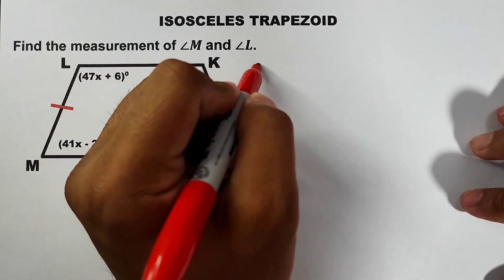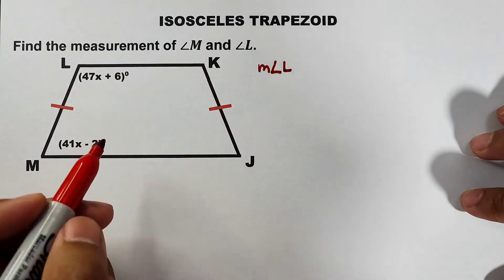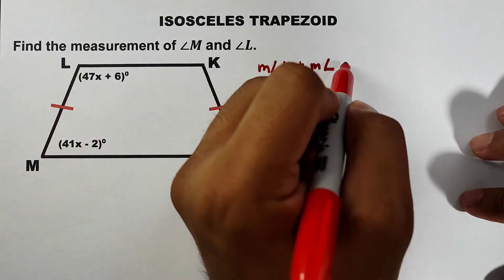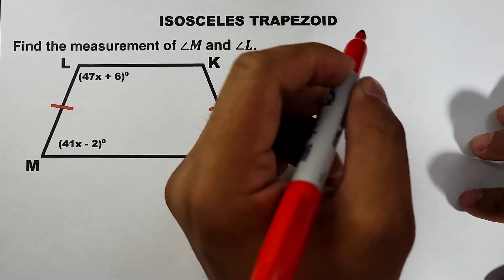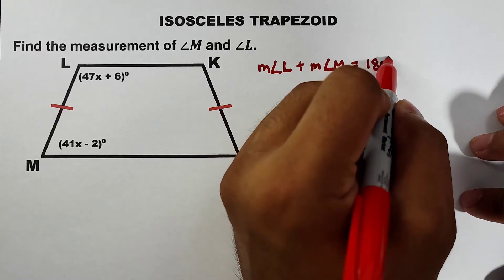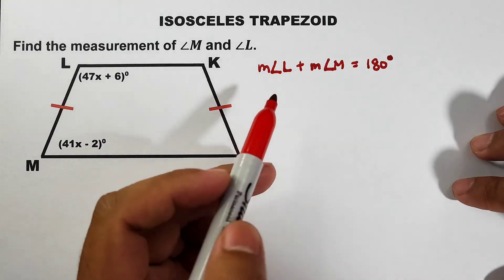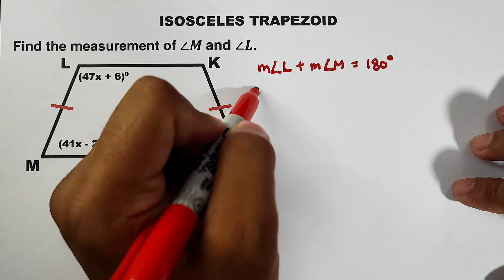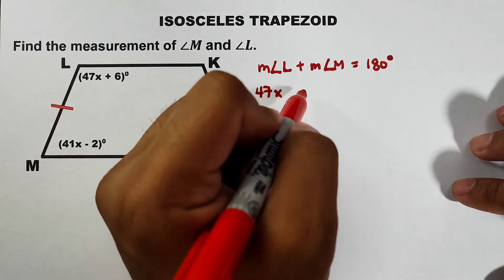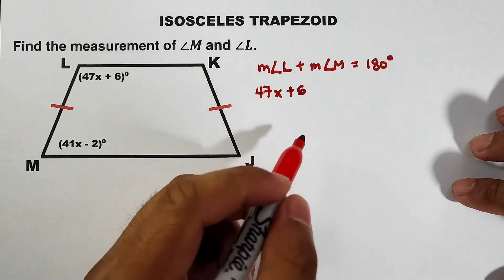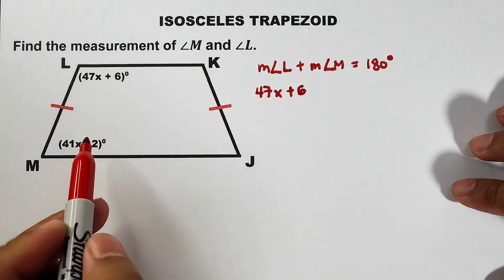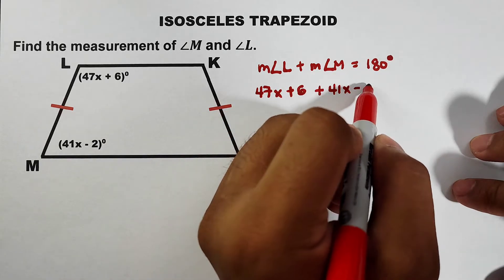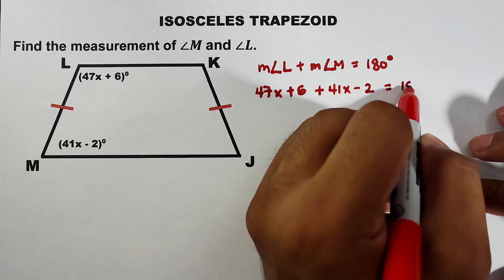We have the measurement of angle L plus the measurement of angle M is equal to 180 degrees. From this equation, we can replace directly. We have 47x plus 6 for angle L.